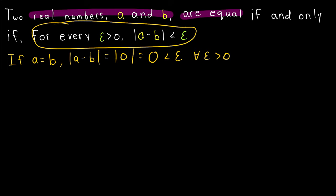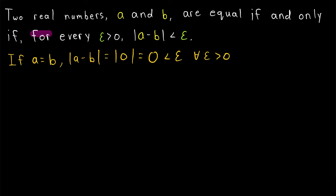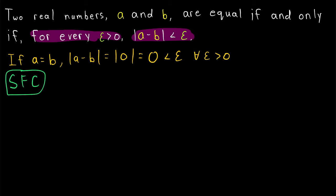If two real numbers are equal, then the distance between them is less than any positive number. Now let's prove the other direction. We'll assume that for every epsilon greater than zero, the absolute value of a minus b is less than epsilon, and we want to prove that a and b must be equal. A contradiction argument might seem like a great idea here. We would say: suppose for the sake of contradiction that a is not equal to b.